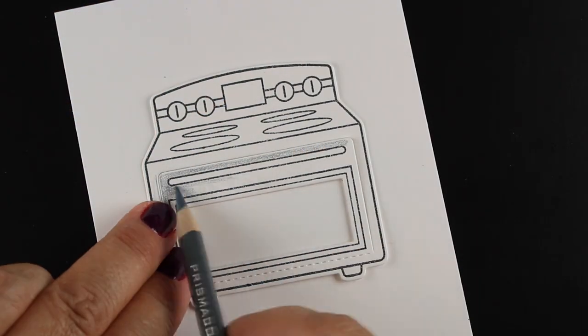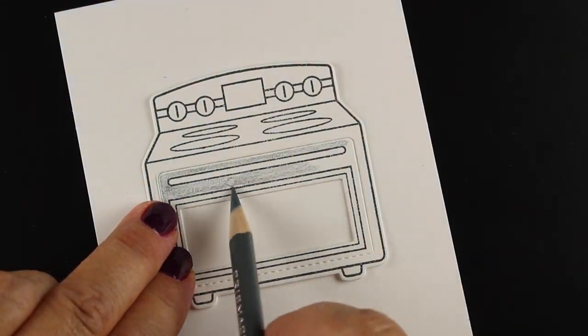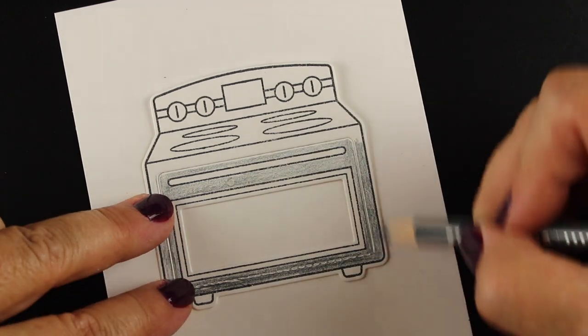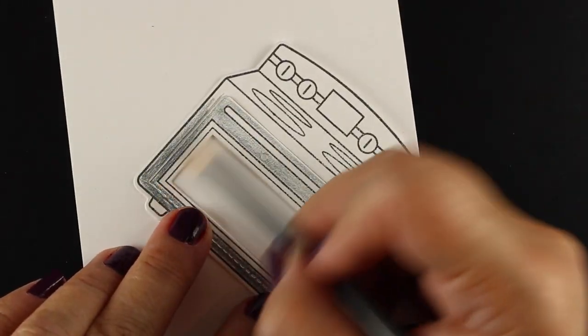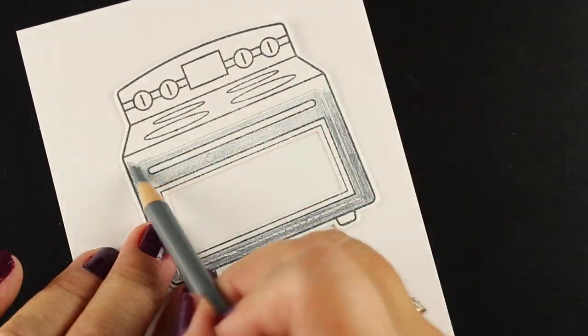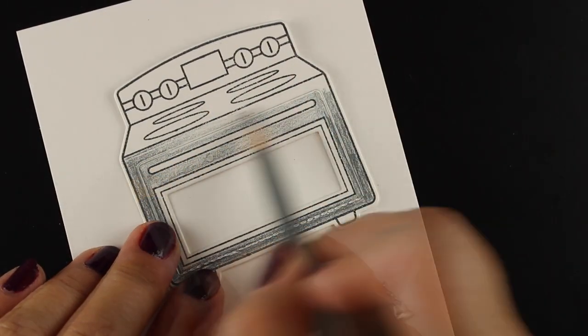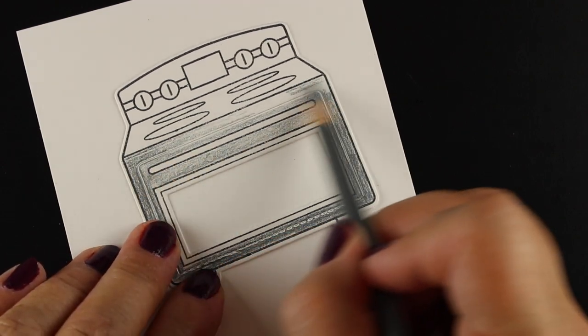And now I'm going to use the same gray on the outside of my oven. And I always start with lighter colors and then work my way into seeing exactly how much pigment I want to put down there. So I thought I'll try doing a little darker at the bottom, lighter at the top.